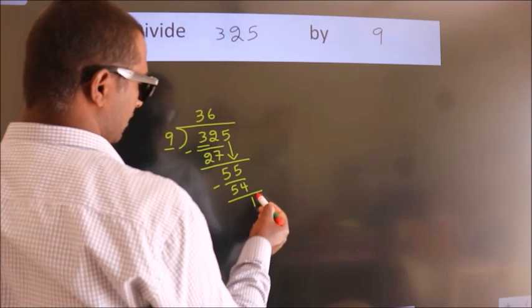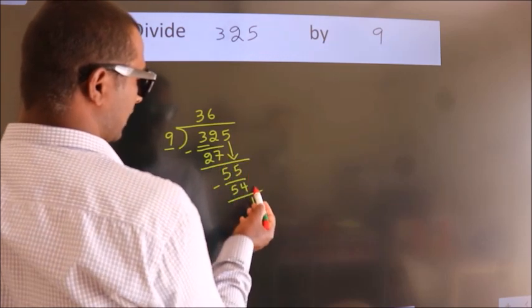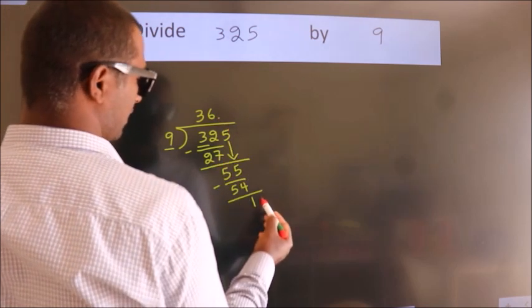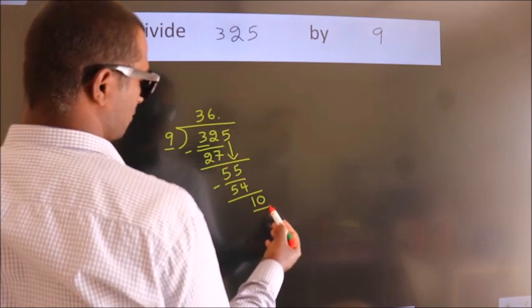After this, no more numbers to bring down. So what we do is we put a dot and take 0. So 10.